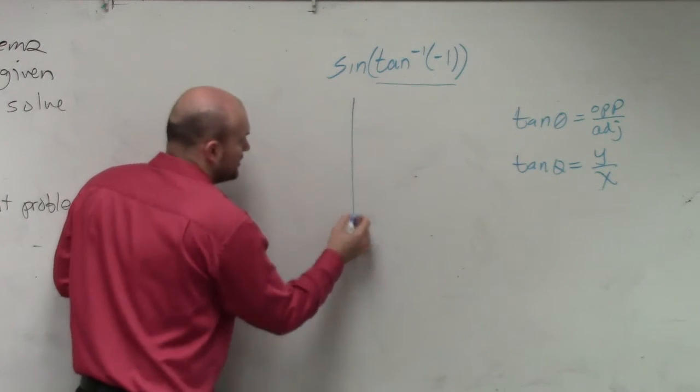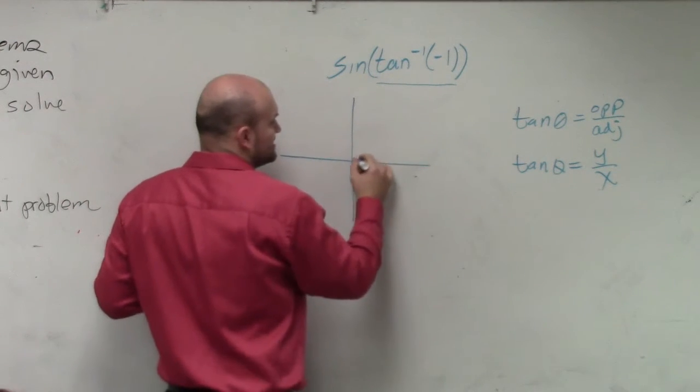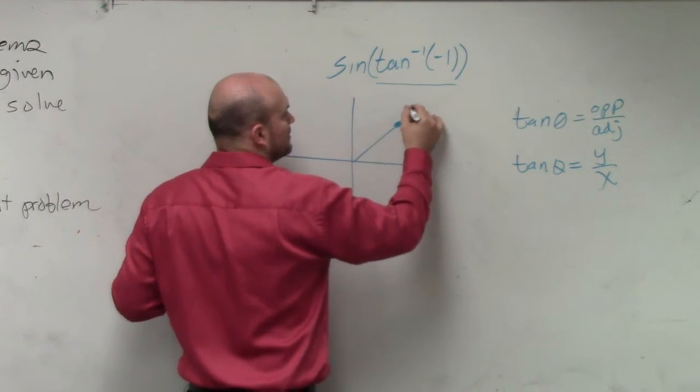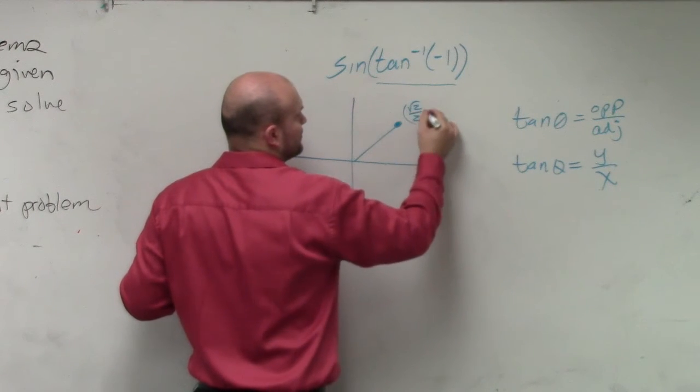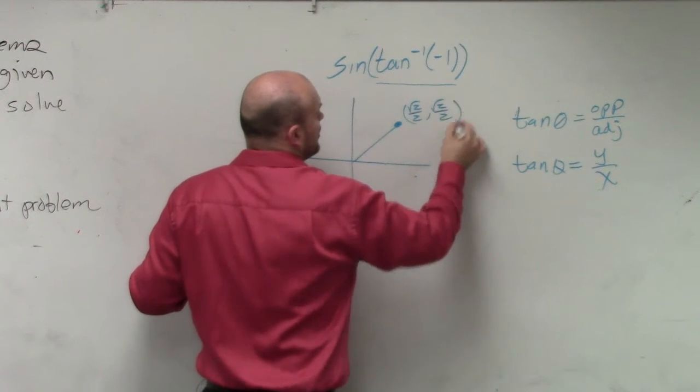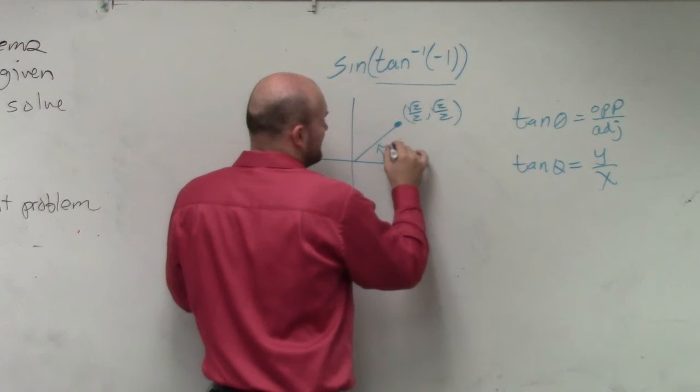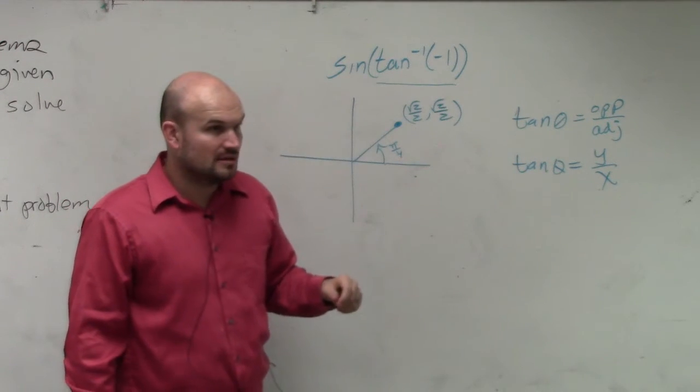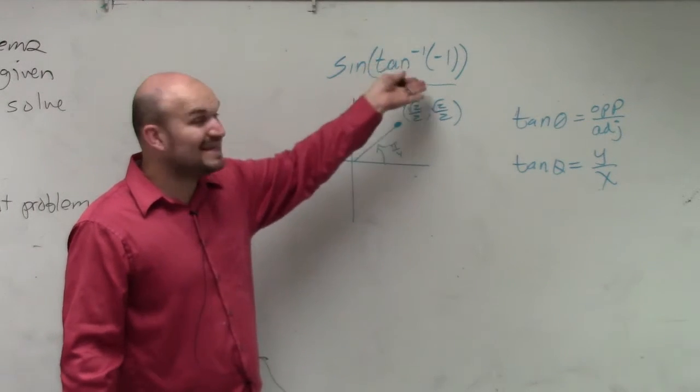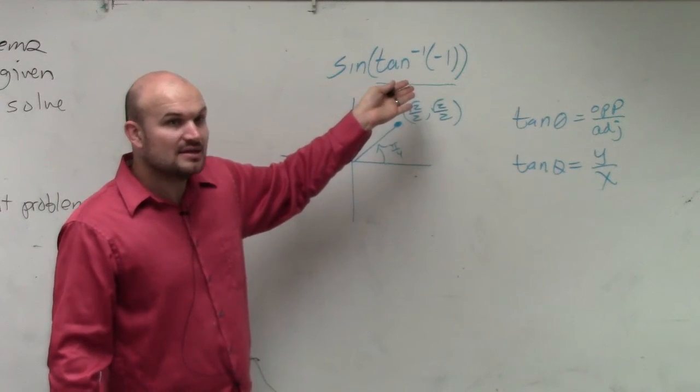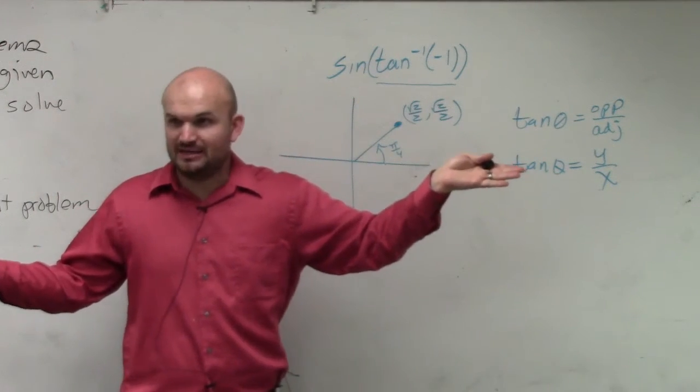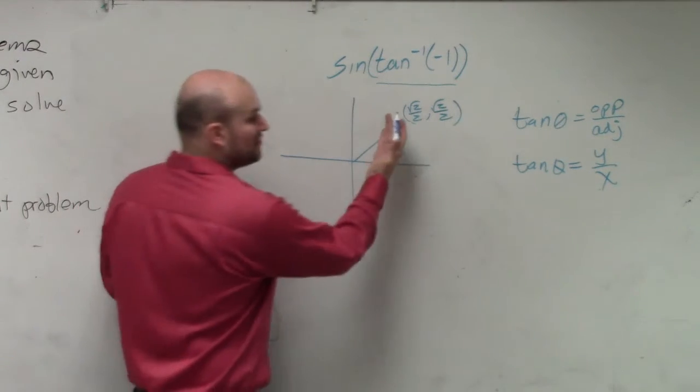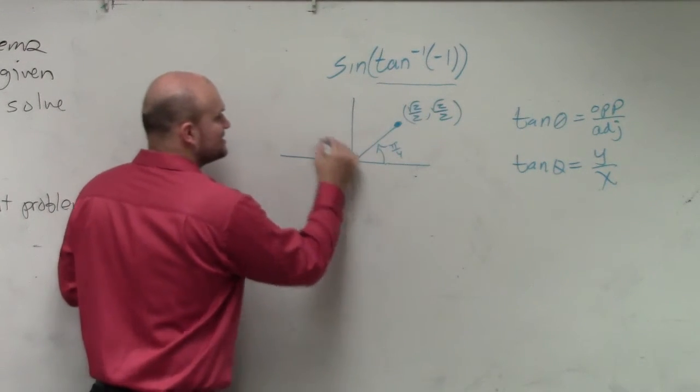Now, we have an issue, though. Because here's that point. When we do the tangent of pi over 4, which is 45 degrees, we get 1. But the problem is, our problem, we need to get negative 1. So we need to figure out when is tangent going to be a negative 1.